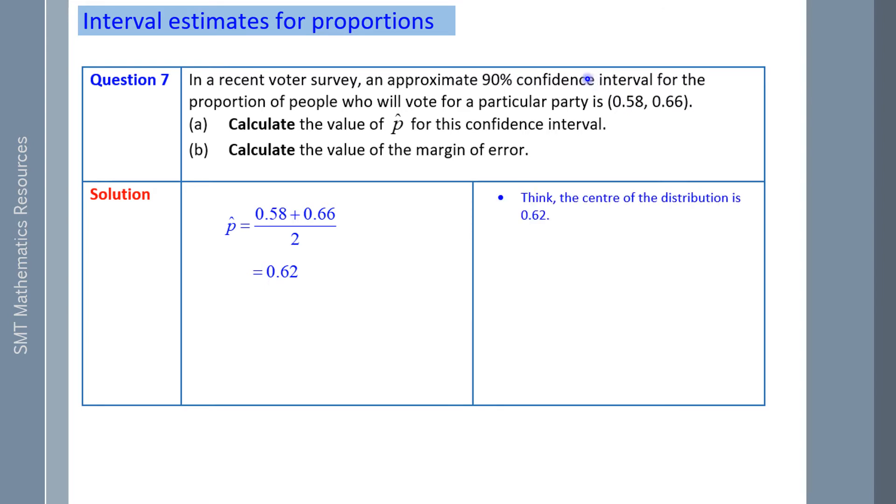Hence, think the center of the distribution is 62. The high boundary is 66. The difference is the margin of error. 66 take 62% is 4%. That's your margin of error. Nice and simple. Looks like it could be complicated, but it's a really quick question.